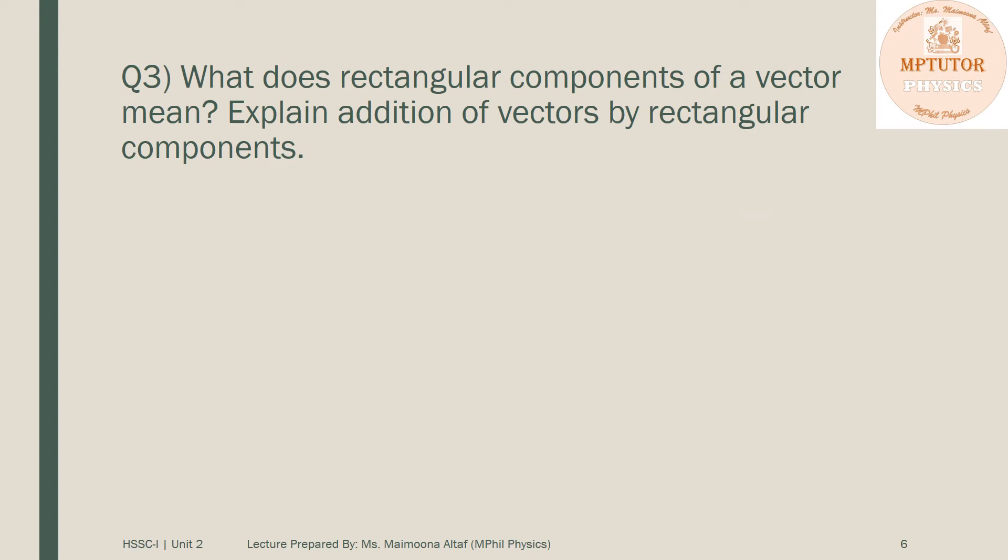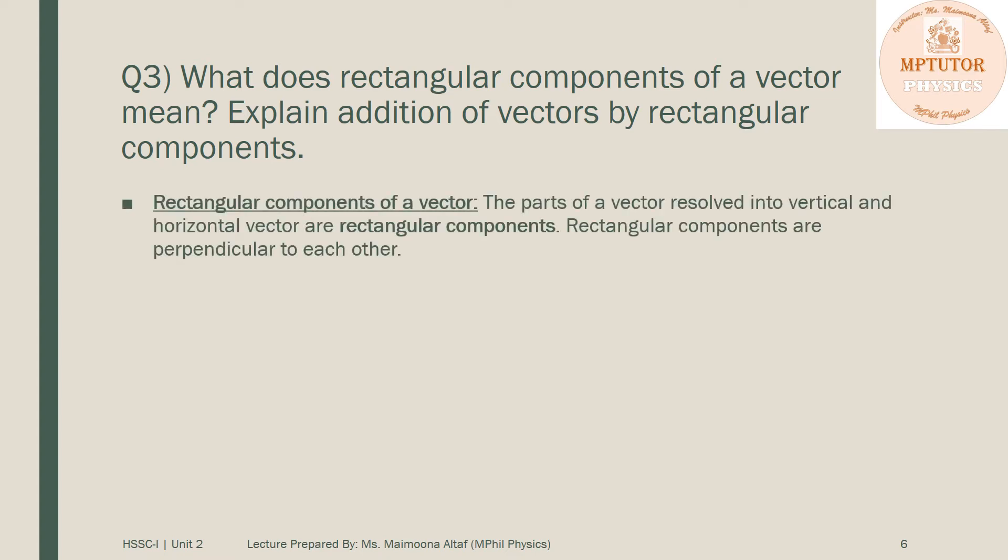Question number three is: what does rectangular components of a vector mean? Explain addition of vectors by rectangular components. So first of all, define the rectangular components of a vector. The parts of a vector result into vertical and horizontal vectors are rectangular components, and the rectangular components are perpendicular to each other.